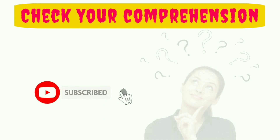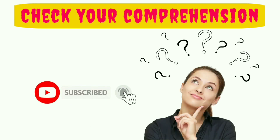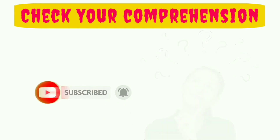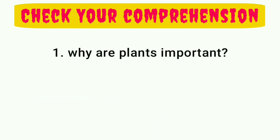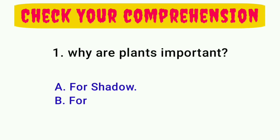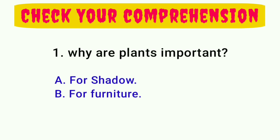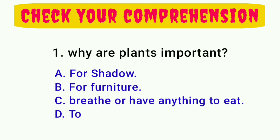Now, check your comprehension. Why are plants important? A: for shadow. B: for furniture. C: to breathe or have anything to eat. D: to burn.